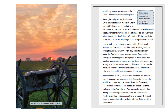By the summer of 1862, President Lincoln felt that it was right to announce a change in the Union's goal for the war — a change he hoped would defeat the Confederacy. He said, 'The moment came when I felt that slavery must die, that the nation might live.' That summer he stayed up late writing and rewriting a document called the Emancipation Proclamation. He would announce that, as of January 1st, 1863, all slaves in states still rebelling against the United States would be forever free.